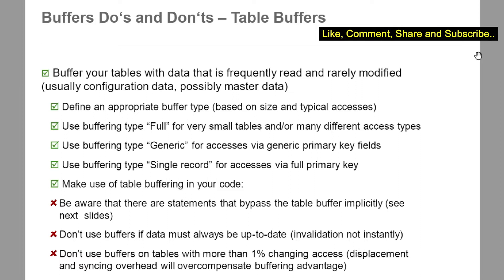Use buffering type full for very small tables and for different access types. Use buffering type generic for accesses via generic primary key fields. You can use buffering type single record for accesses via full primary key.